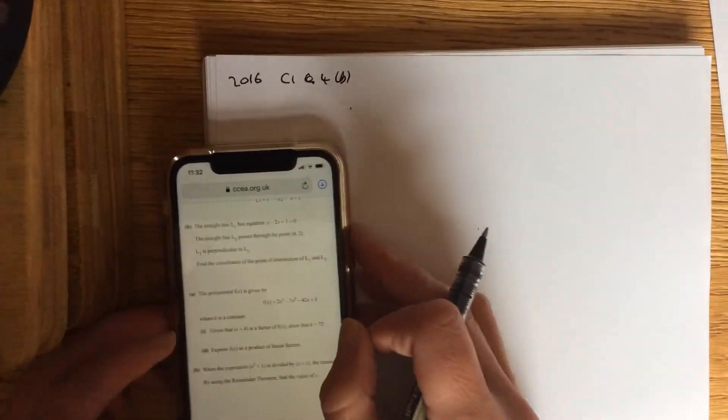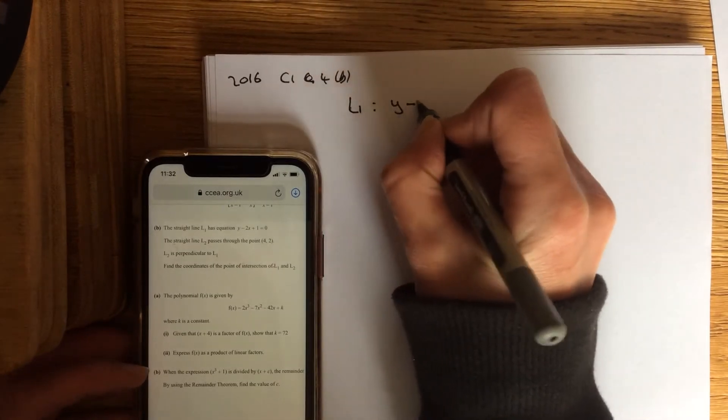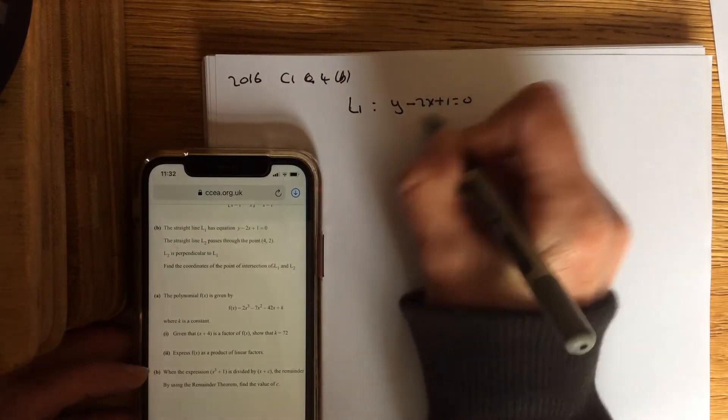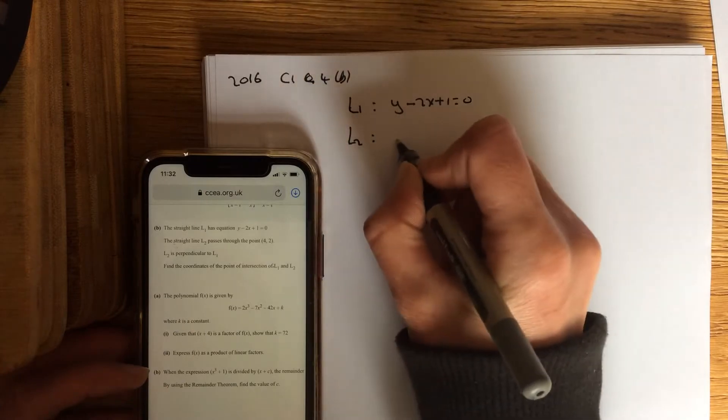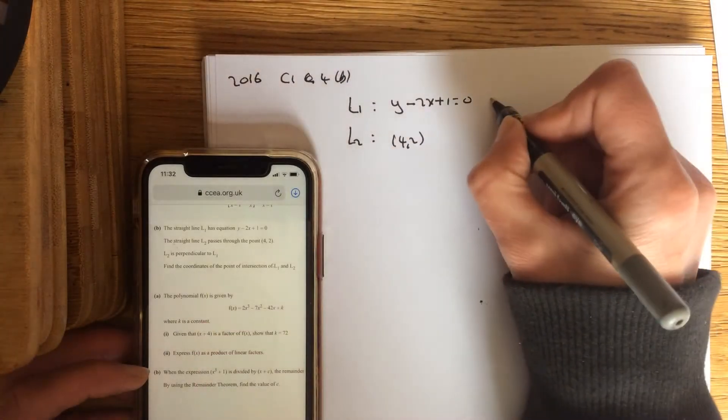Okay, 2016 C1 question 4b. So we've got the straight line L1, which is y minus 2x add 1 equals 0. I've got the straight line L2, and it passes through this point. It is perpendicular to L1.